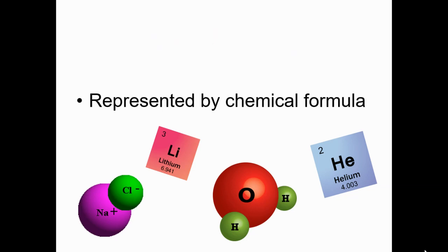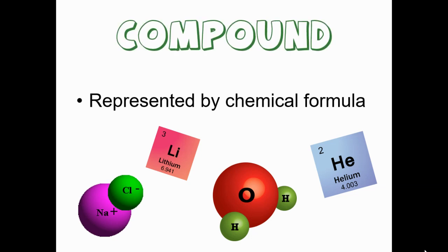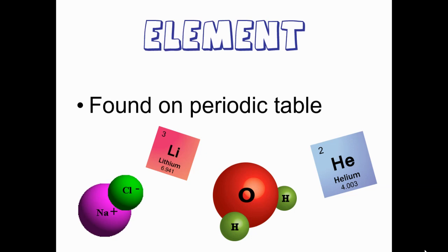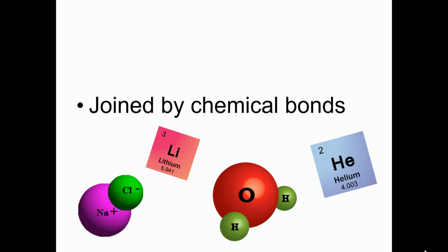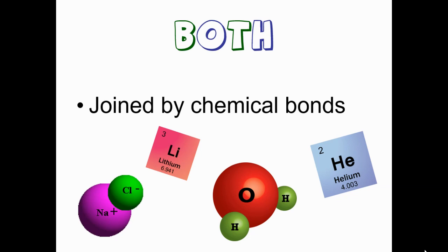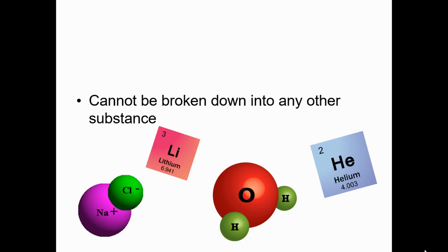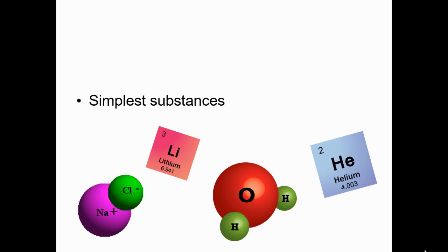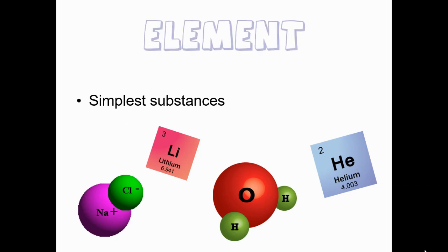Something represented by a chemical formula is a compound. If it's found on the periodic table, it's an element. If it's joined by chemical bonds, it could be an element or a compound. If it cannot be broken down into any other substance, it's an element. The simplest substances are elements.